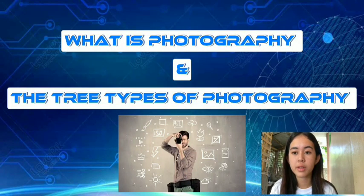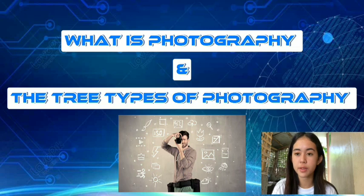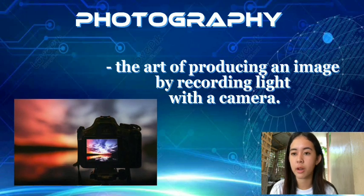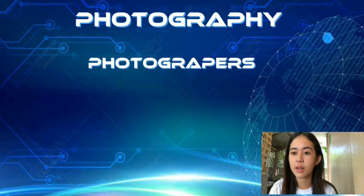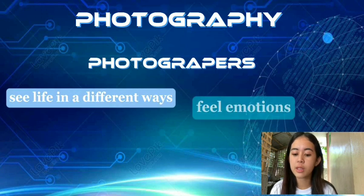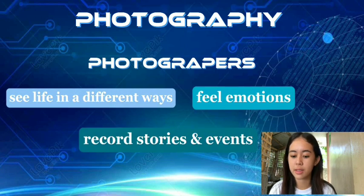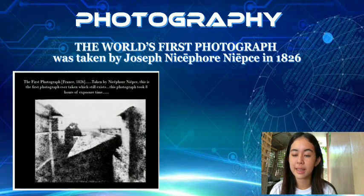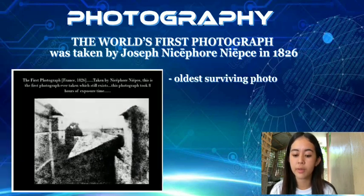Hello everyone. Today we are discussing what photography is and the three types of photography. Photography is the art of producing an image by recording light with a camera. Photographers use their camera to see life in a different way, feel emotions, and record stories and events. The world's first photograph, or at least the oldest surviving photo, was taken by Joseph Nicéphore Niépce in 1826.